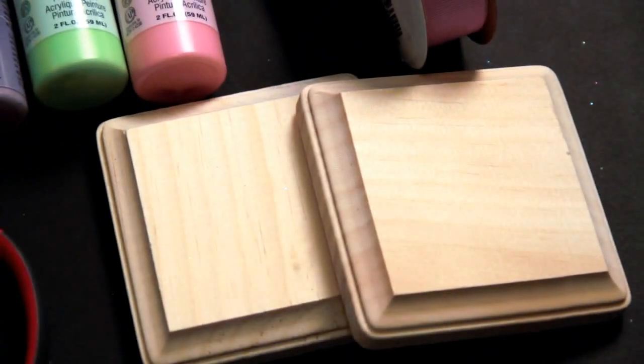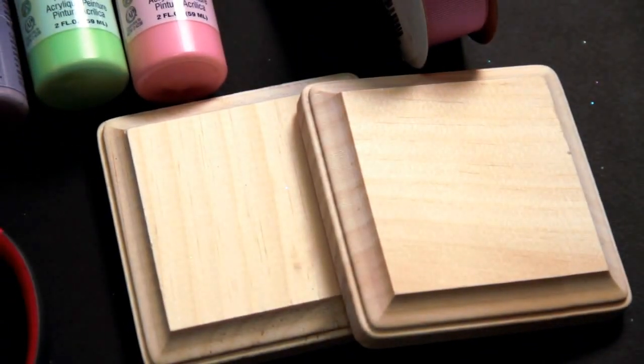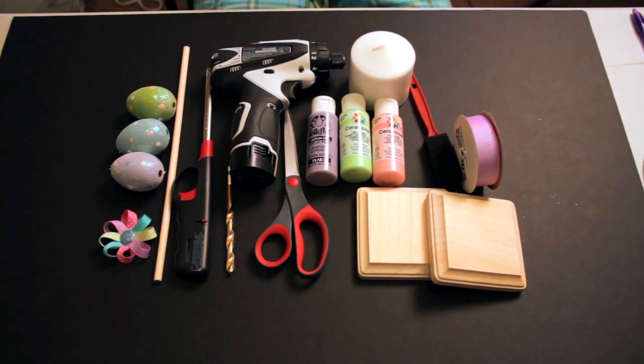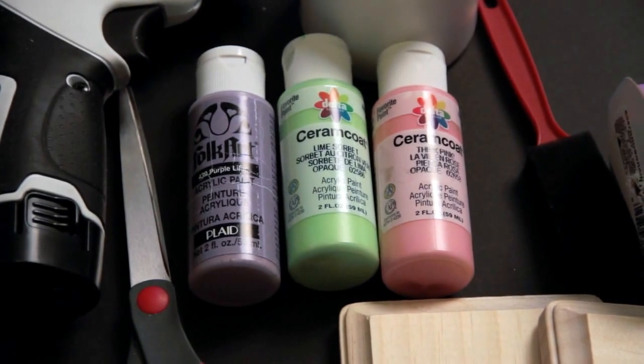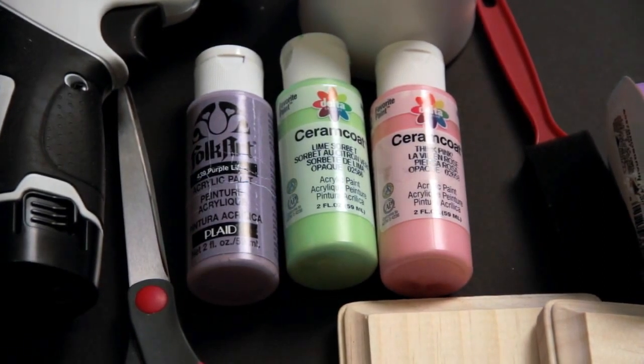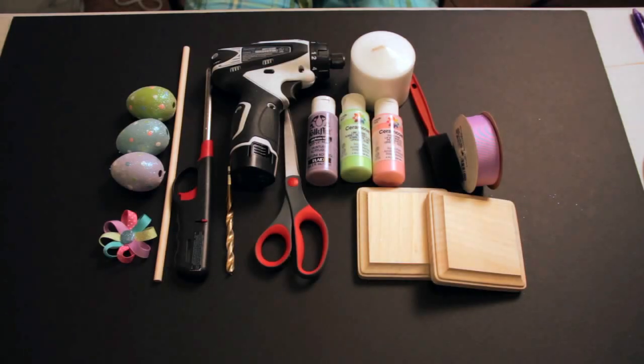Six 4x4 pieces of wood, also purchased at a local craft store. Three 5-16 inch dowels. Three colors of craft paint or spray paint. I have chosen the colors purple lilac, lime sorbet, and think pink.